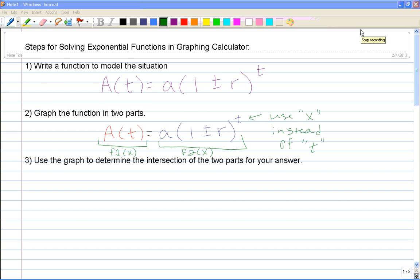We're going to write a function to model the situation using the formula that we have already discussed. A(t), which is the final amount, equals a, which is the initial amount, times 1 plus if the value is going up, minus if the value is going down, r, which is the rate in decimal form, raised to the power of t, which will be our time.